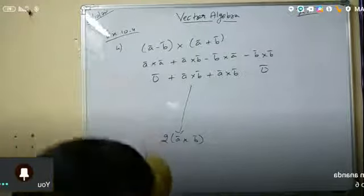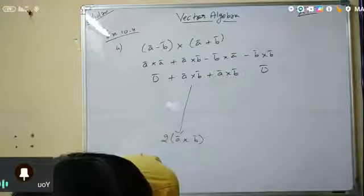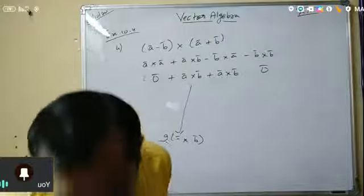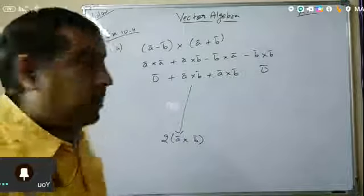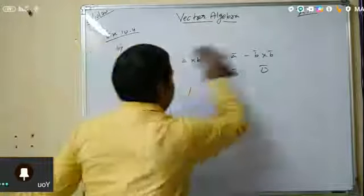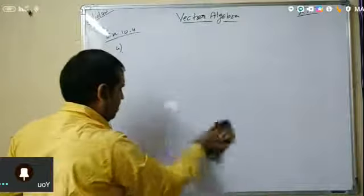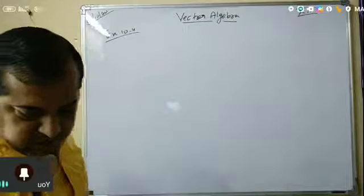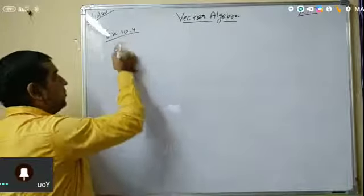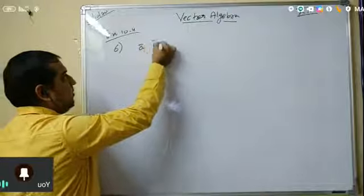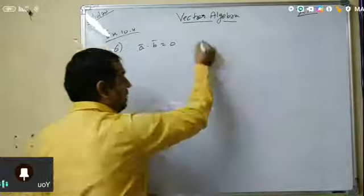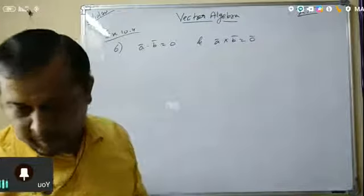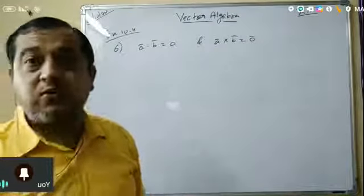Question 6 is easy. Given that vector a dot b is equal to 0, and vector a cross b is equal to 0 — what can you conclude about vectors a and b? So we have a dot b equal to 0, and a cross b equal to the zero vector.